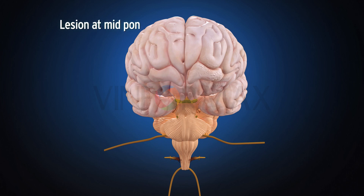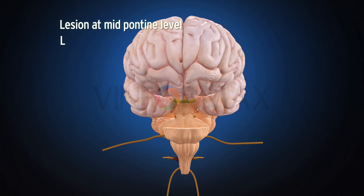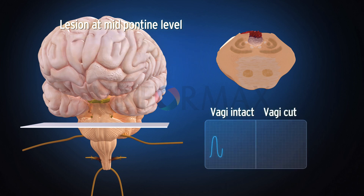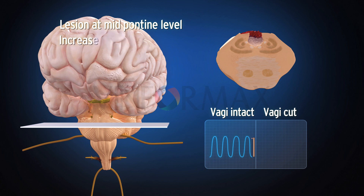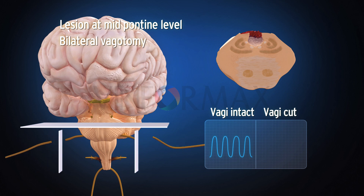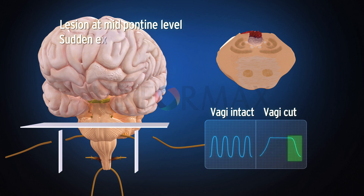A lesion at the mid-pontine level with vagal afferent influence intact leads to reduced respiratory rate with increased depth of respiration. Removal of vagal influence by bilateral vagotomy following mid-pontine sectioning leads to prolonged inspiration and sudden expiration. This type of breathing is known as apneistic breathing.